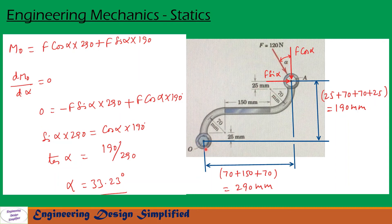For the second portion, to find alpha that maximizes the moment about O, we differentiate the moment equation with respect to alpha and equate it to zero. The equation M_O equals F cos alpha into 290 plus F sin alpha into 190, after differentiating and setting equal to zero, gives: 0 equals minus F sin alpha into 290 plus F cos alpha into 190. The derivative of cos alpha is minus sin alpha, and the derivative of sin alpha is cos alpha. Solving this, we get alpha equal to 33.23 degrees.